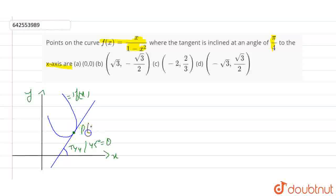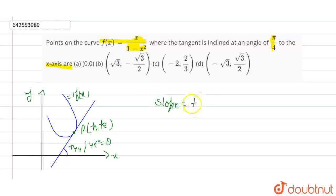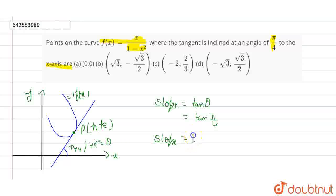So basically, let's suppose they are h and k for the point P. We know that the slope of the tangent is equal to tan(theta), so slope is equal to tan(theta), and here theta is π/4. So basically, the slope value is 1 — we know that tan(45°) value is 1, which is also equal to the slope.